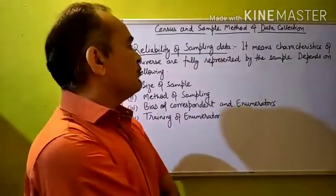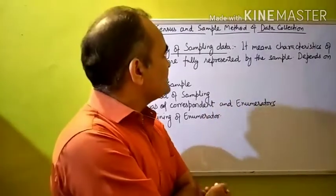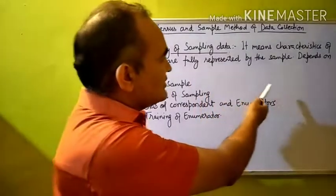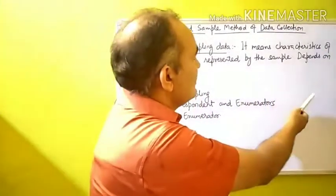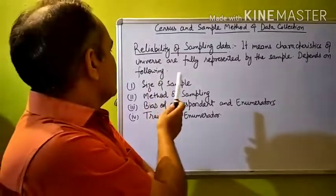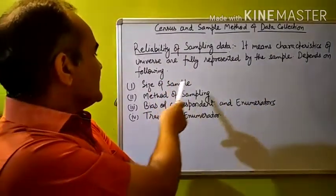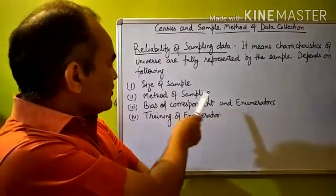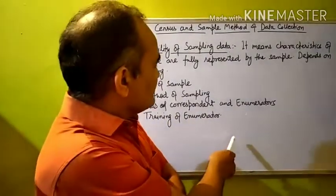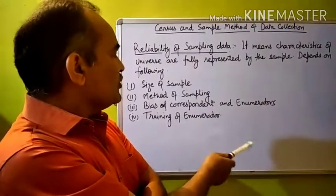The next topic is reliability of sampling data. Reliability of sampling data means the characteristics of the universe are fully represented by the sample. It depends on the following points: the size of sample, method of sampling, bias of correspondents and enumerators, and training of the enumerators.